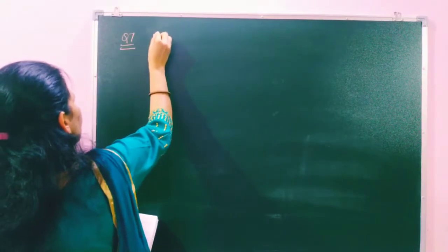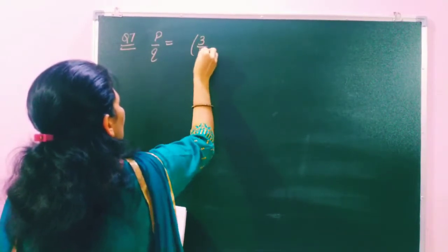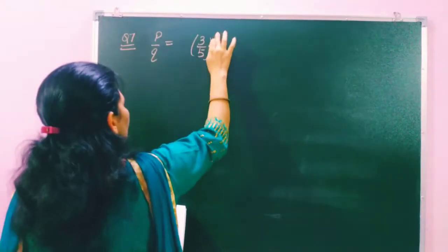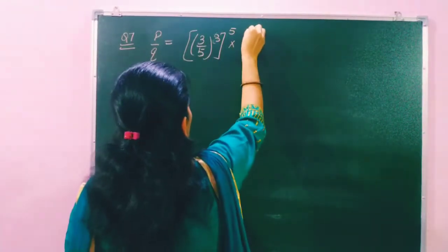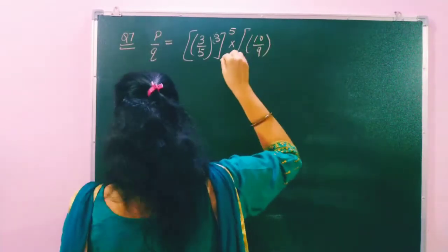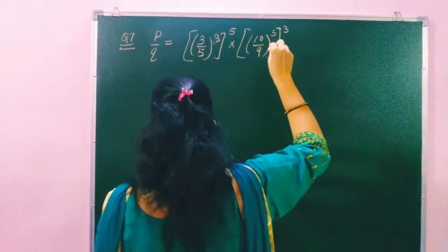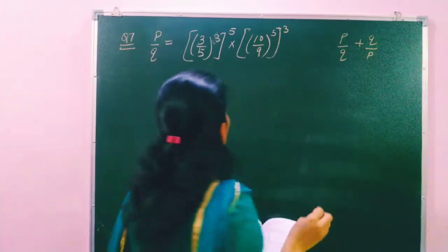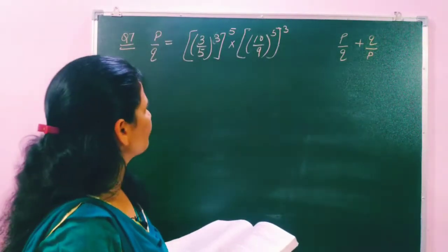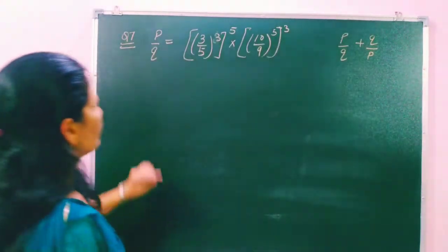In question number seven, they have given: if pq, its value is (3/5)^3 raised to the power 5, then multiplied by (10/9)^5 raised to the power 3. From here we have to find out the value of pq + q upon p. Let's cross-check: (3/5) cube power of power 5, (10/9) cube whole power 5 and cube.